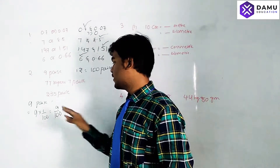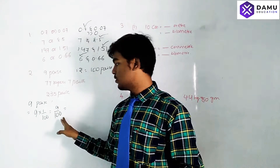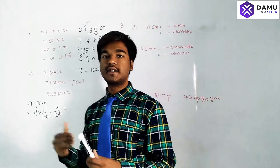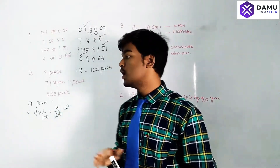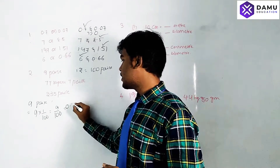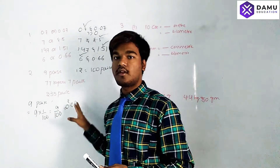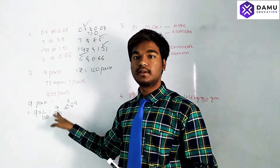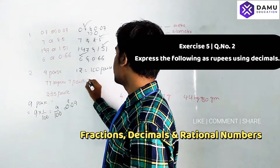The shortcut method: in the denominator there are two zeros, so we need to occupy two places from the right side with the given numerator. We always start with zero point. Since there is only one place in the numerator (which is 9), we write zero point zero nine rupees. So nine paise equals 0.09 rupees.